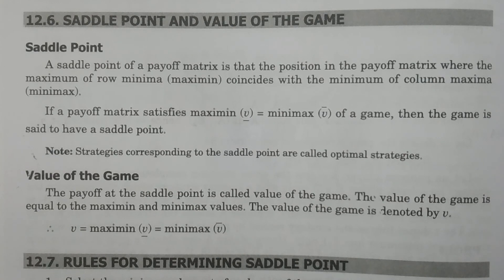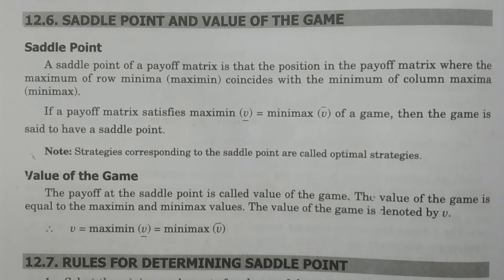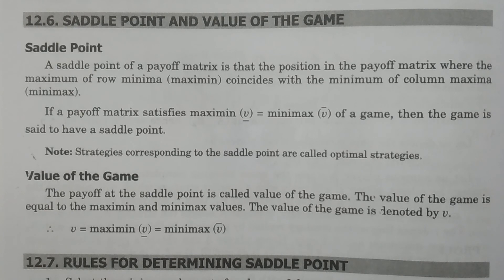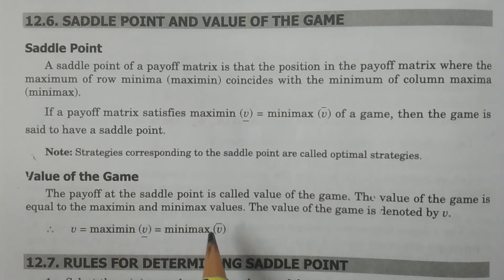Now coming to the value of the game: the payoff at the saddle point is called the value of the game. That is, the element at that particular position of the matrix where the saddle point exists is the payoff, and that payoff is called the value of the game. The value of the game is equal to the maximin and minimax values.